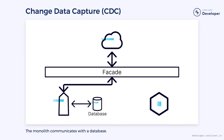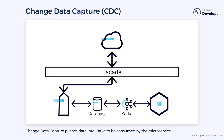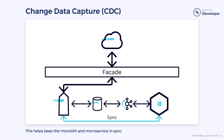Event-driven architecture can provide some help here. We can connect a change data capture system to our database. Events from the database can be fed into something like a Kafka topic, where they can be consumed by the new microservice. This can simplify the sharing of data between the old and new systems while ensuring they stay in sync.